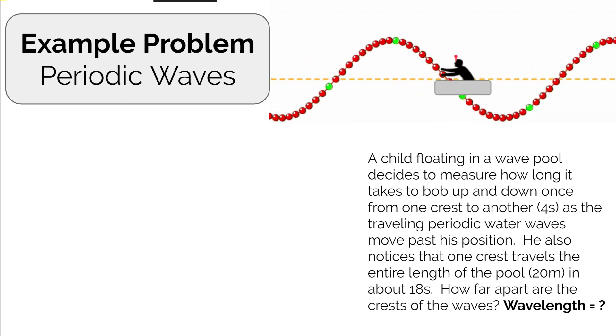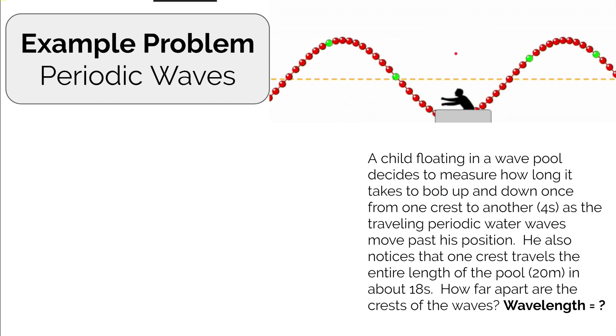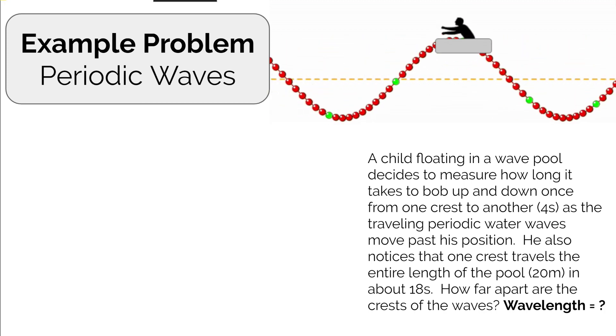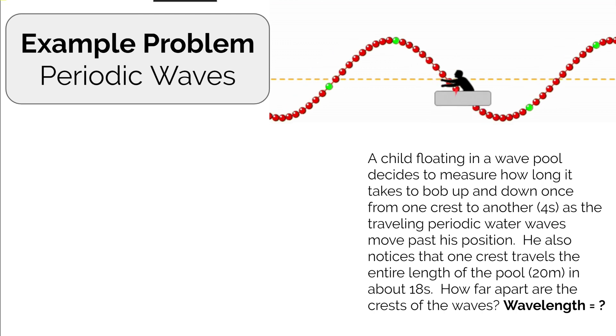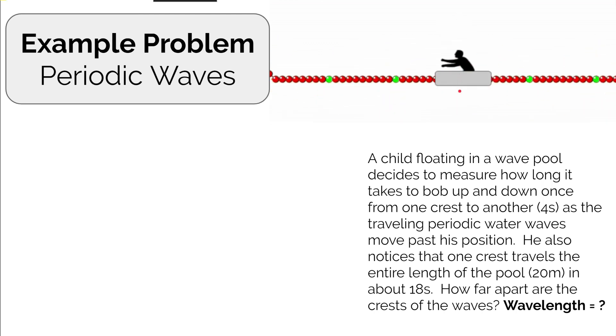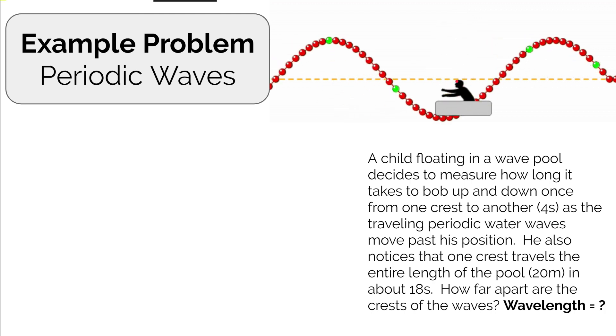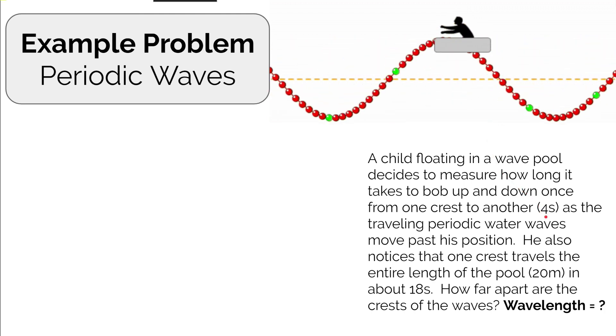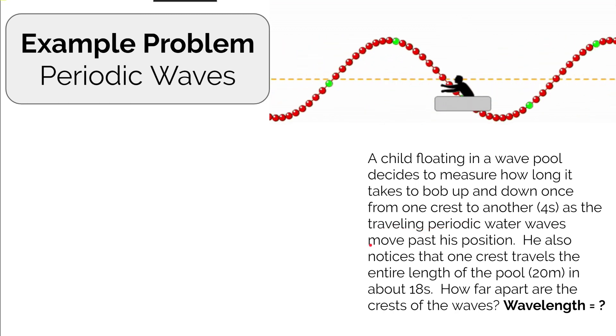From this position going all the way down and back up to that same position. How much time it takes for any part of a material or medium to go through one cycle of oscillation is called the period. Let's say the period is four seconds as the traveling periodic water waves move past this position.